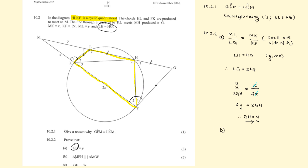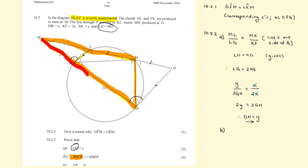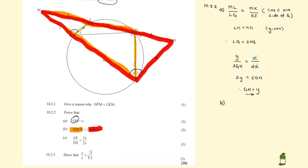Moving on to question B: prove that triangle MFH is similar to triangle MGF. Remember these three parallel lines mean similar. With similarity, the position of the letters is exactly the order in which the angles are equal. So this statement says angle M equals angle M — angle M is common, and that will be your first reason to prove similarity.